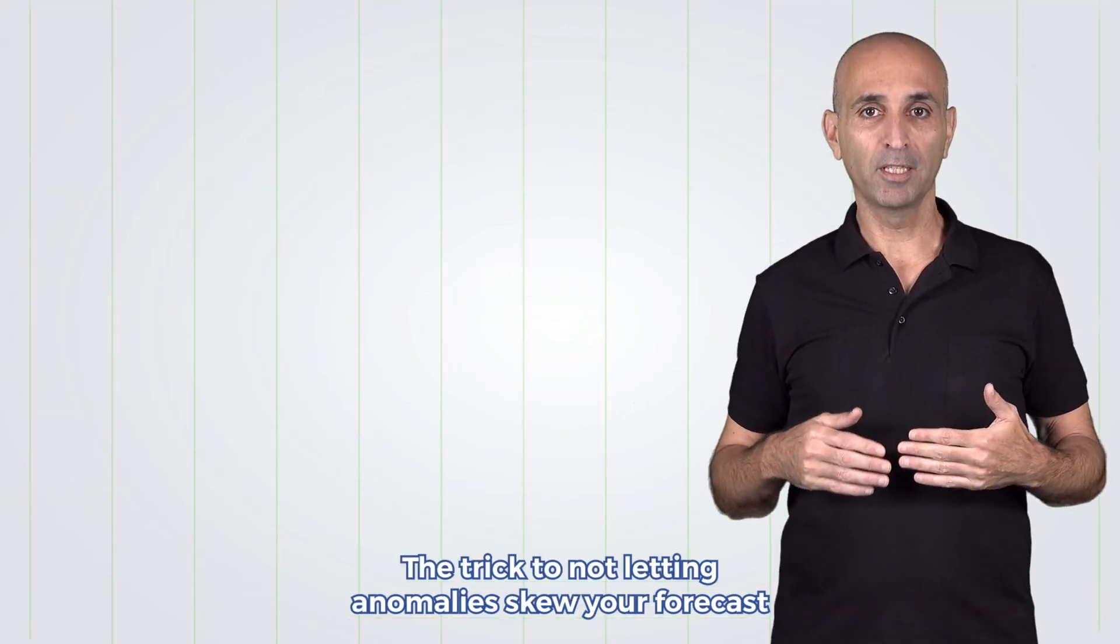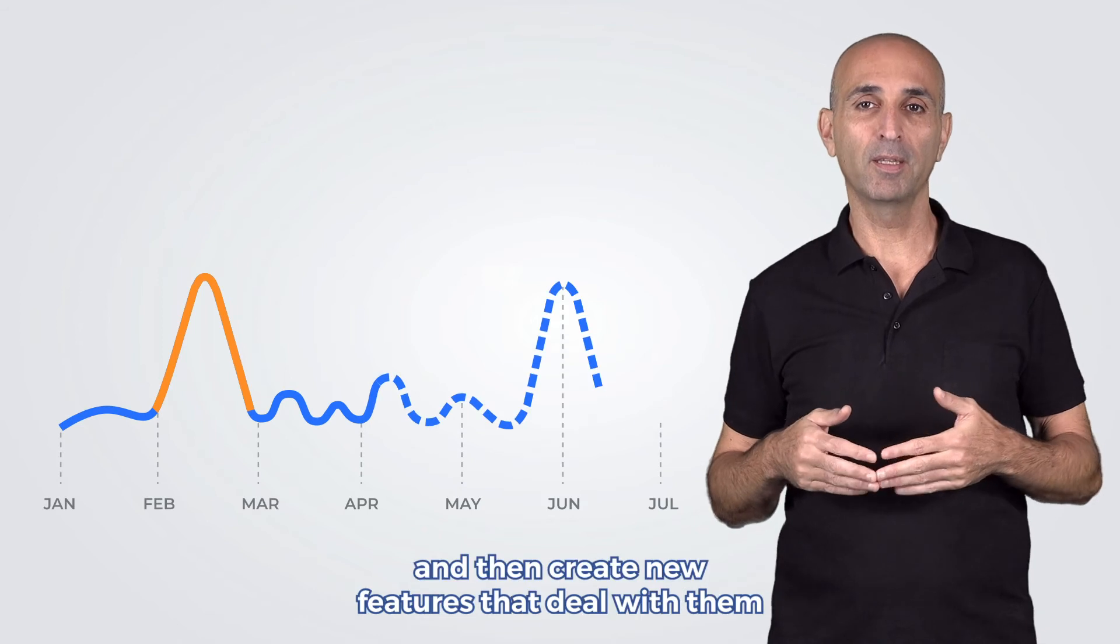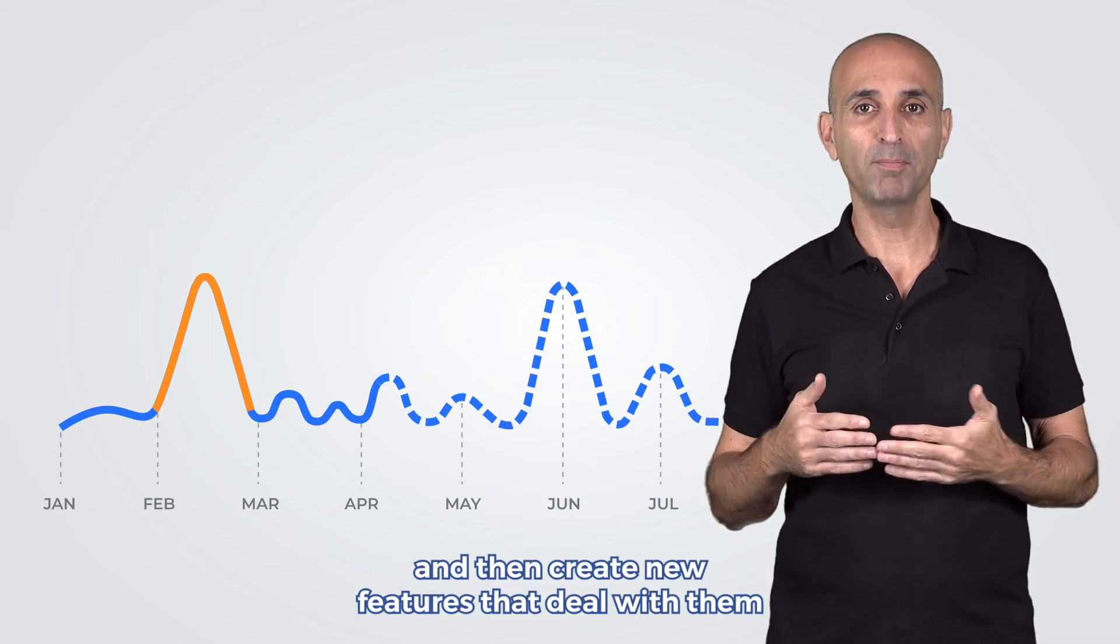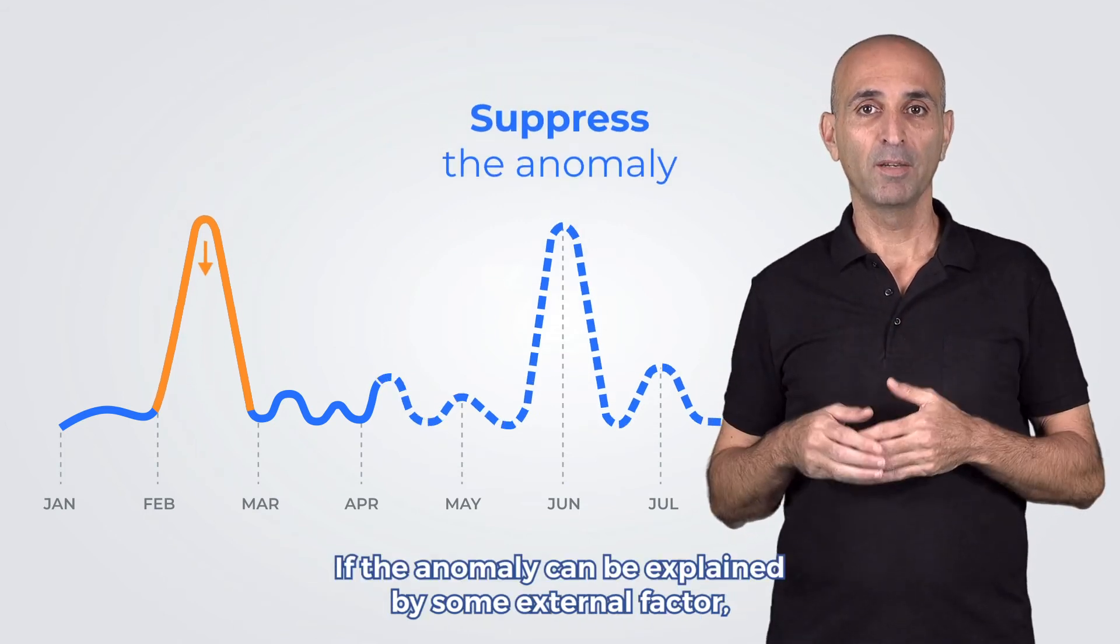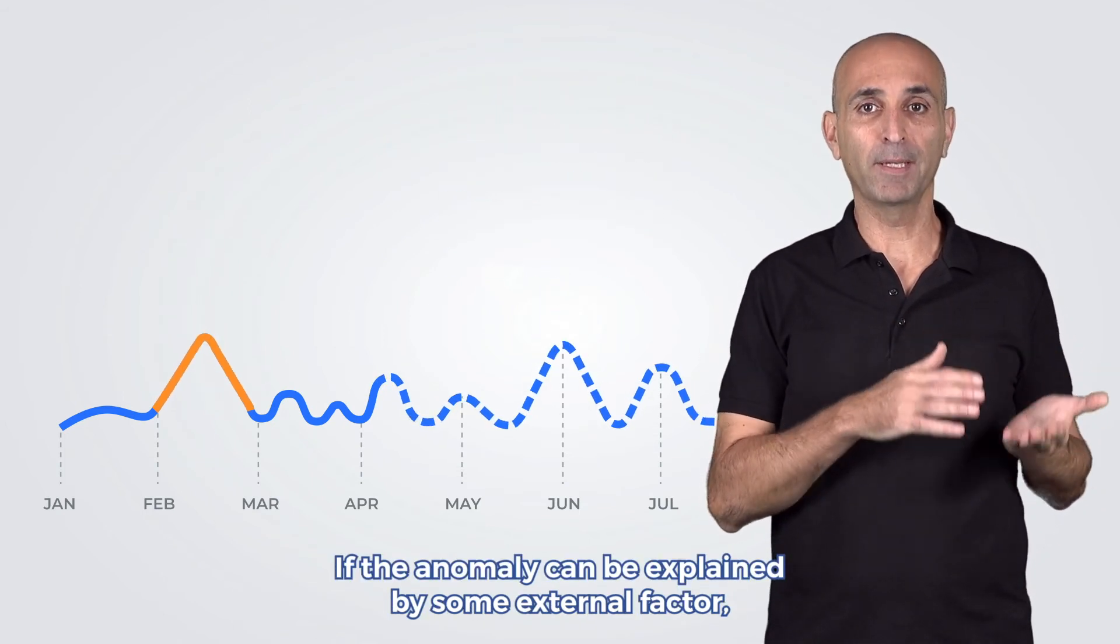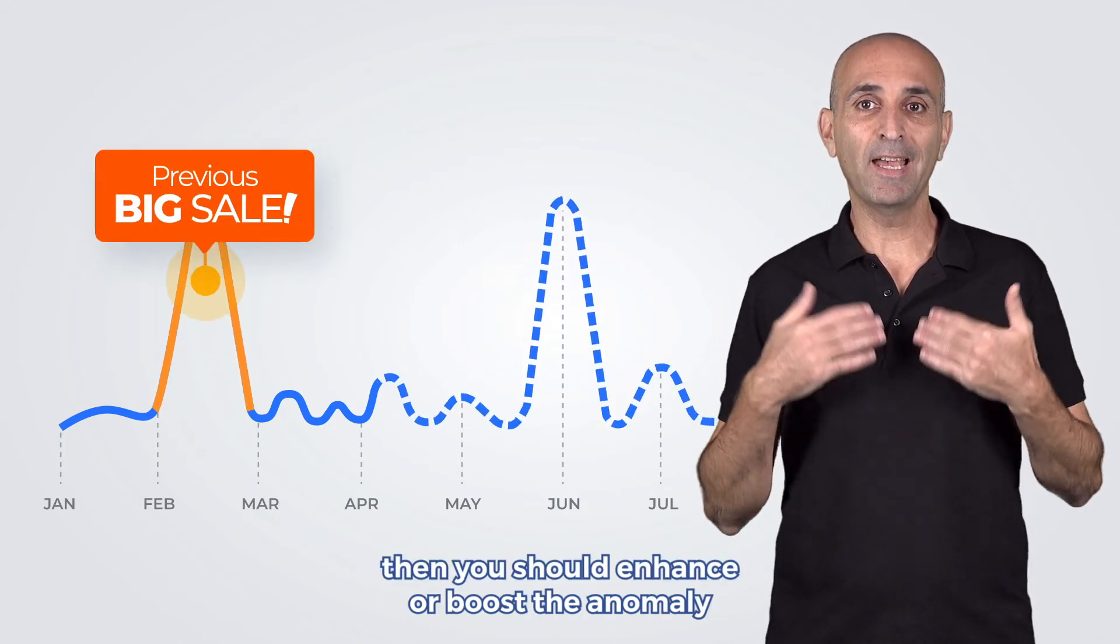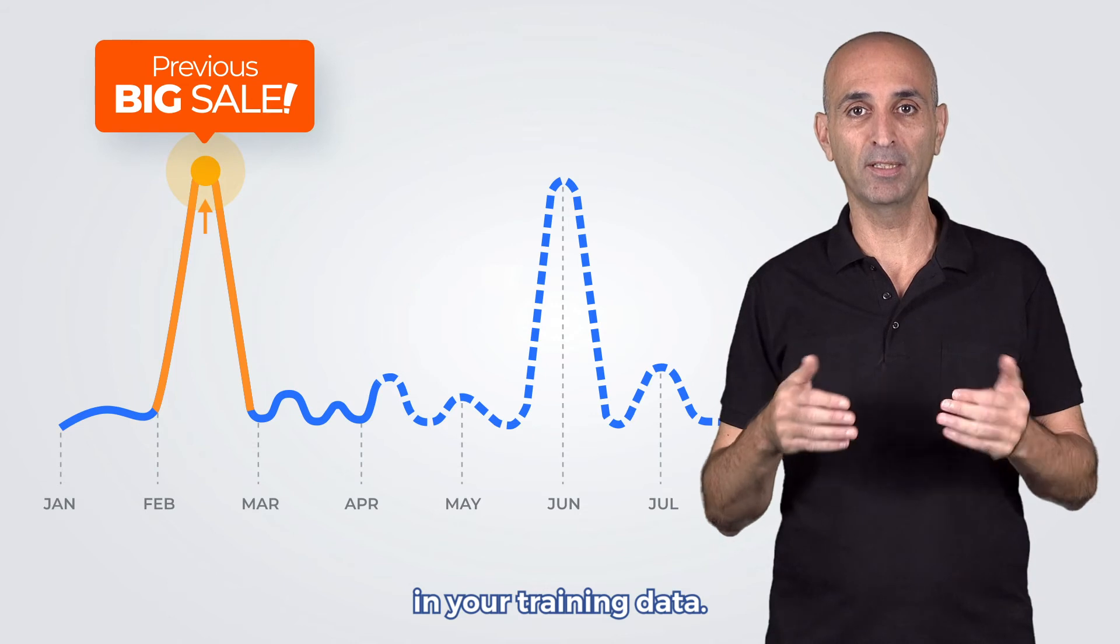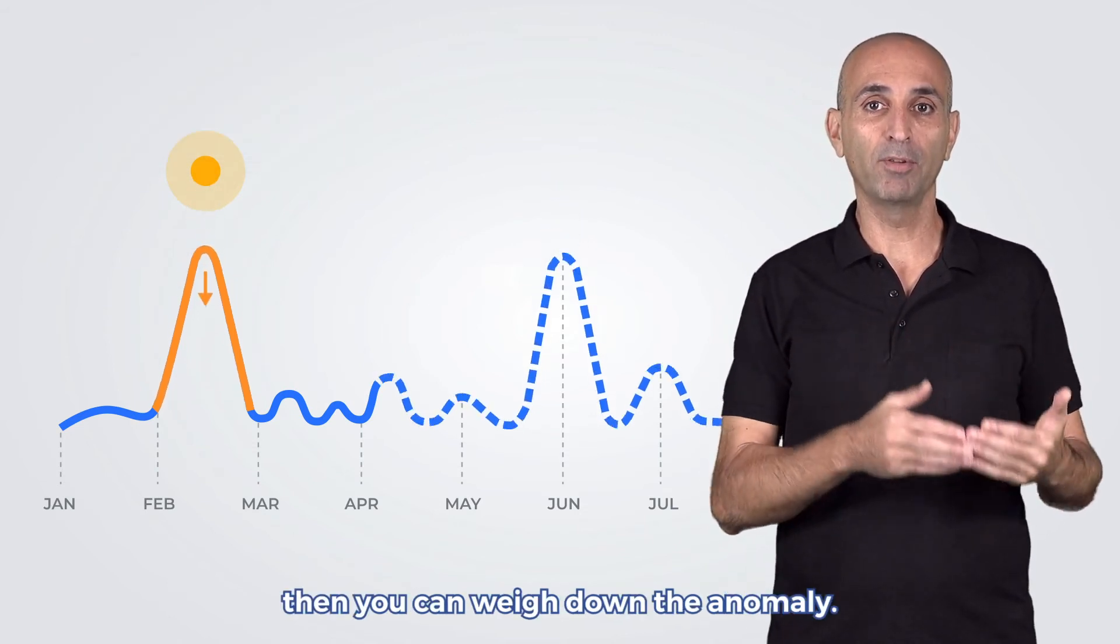The trick to not letting anomalies skew your forecast is to discover them before training and then create new features that deal with them based on their relevance. We have two types depending on whether the anomaly can be explained. If the anomaly can be explained by some external factor, either another measure or event, then you should enhance or boost the anomaly in your training data. If the anomaly cannot be explained, then you can weigh down the anomaly.